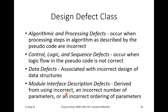Module interface description defect is derived from using an incorrect or incorrect number of parameters, or incorrect ordering of parameters — that is, in your function's parameter passing in C, C++, or Java. If you pass parameters incorrectly or use the wrong number of parameters or the wrong order, that is the module interface description defect.